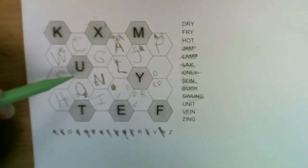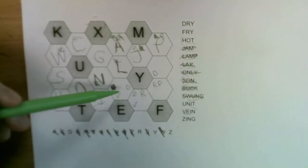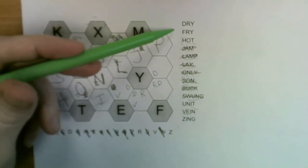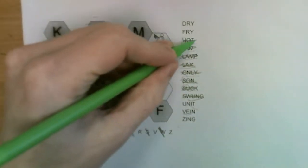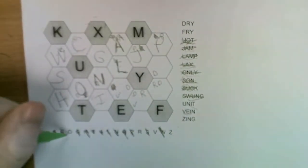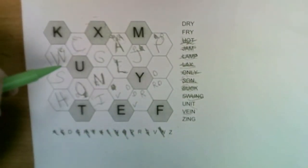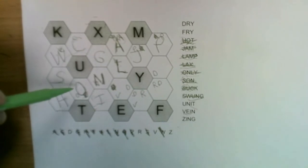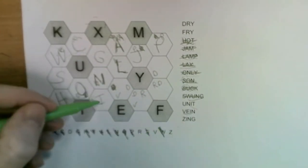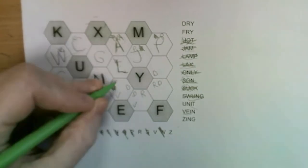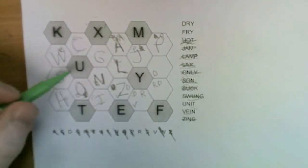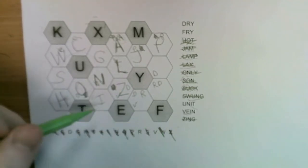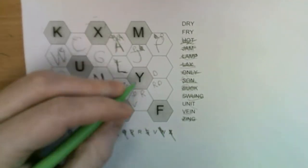Now what is left? We've got dry, fry, hot. Hot is placed. We've got the Z, and we've got zing to place. So the only available neighbor of the I is here, so that's our zing.